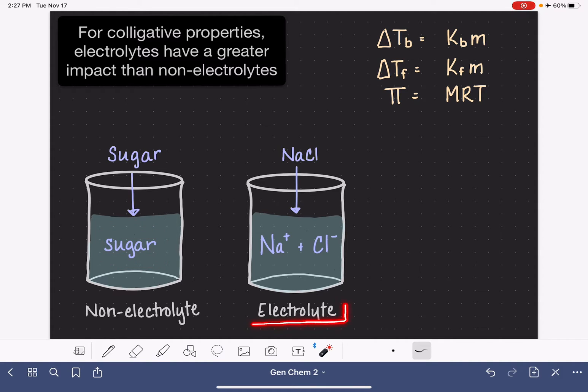An electrolyte, on the other hand, is a substance that dissociates when it dissolves. Something like sodium chloride, when it is put into water, not only does it dissolve, but it dissociates into two separate particles, the cation and the anion as well.